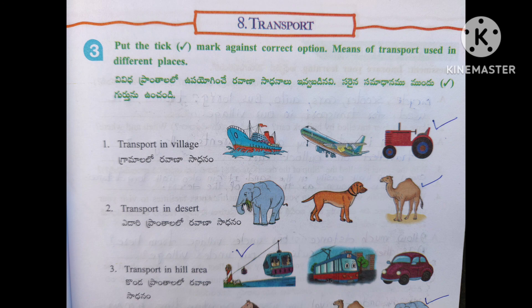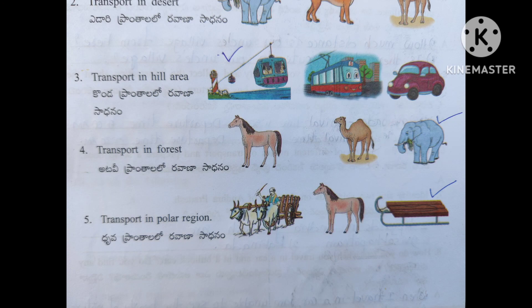Put a tick mark on the correct option for means of transport used in different places. Transport in Village: the answer is Tractor. Transport in Desert: the answer is Camel. Transport in Hill area: the first option is the answer. Transport in Forest: the answer is Elephant. Transport in Polar Region: the third option is the answer.